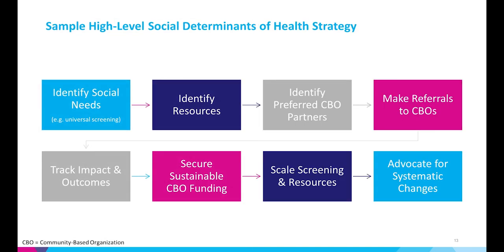This is an example of a high-level SDOH strategy. The first step is to identify social needs, which could be through targeted or universal screening. The next step is to identify corresponding resources, often delivered by preferred community-based organization partners. The next step is to make a referral to the CBO, then to track the impact and outcomes of those referrals and associated resources. Next, ideally, the various parties work to secure sustainable funding for the community-based organization so they can scale screening and resources, and finally, to advocate for system change to address upstream causes.